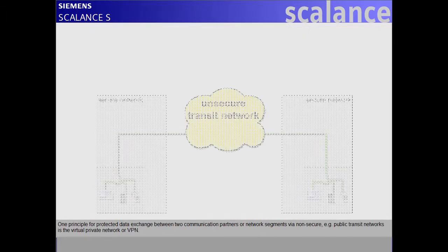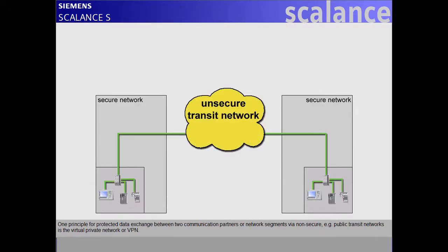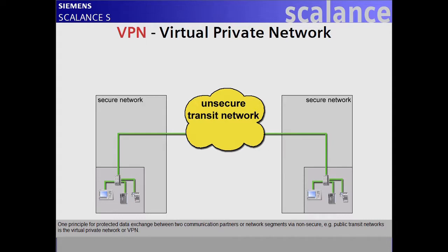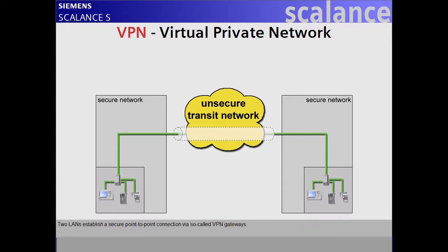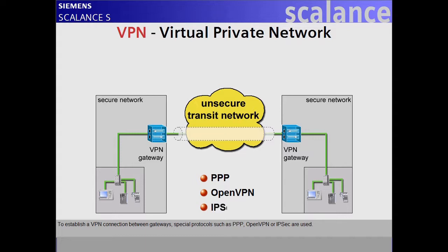One principle for protected data exchange between two communication partners or network segments via non-secure, for example public transit networks, is the virtual private network or VPN. After establishment of a secure tunnel, the data exchange is fully transparent for the communicating applications. Two LANs establish a secure point-to-point connection via so-called VPN gateways, using special protocols such as PPP, OpenVPN, or IPsec.